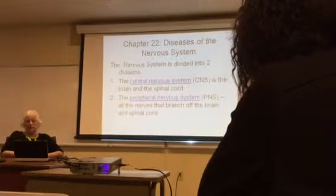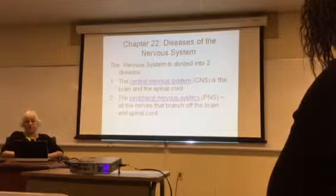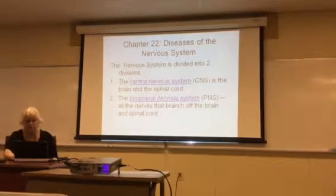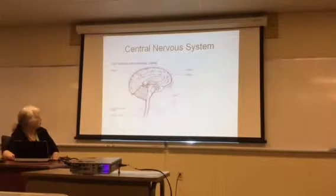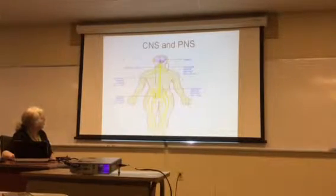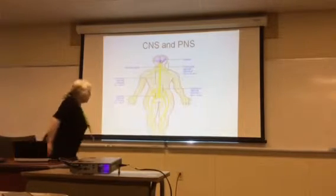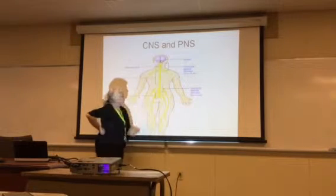The nervous system is comprised of the brain and the spinal cord, and the peripheral nervous system — those are the nerves that are coming off of the brain and the spinal cord. All of these nerves that branch out from the spinal cord are your peripheral nerves.